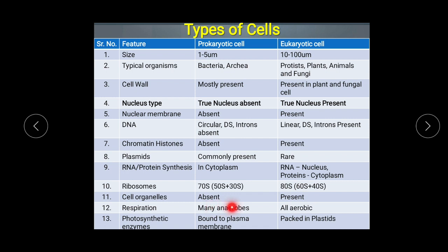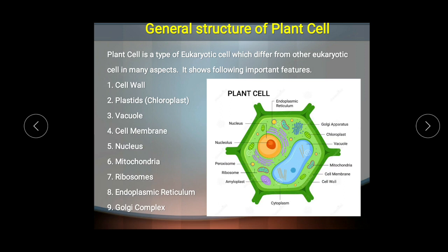Regarding respiration, many anaerobic type organisms are present in prokaryotes, while aerobic type respiration is seen in eukaryotes. Photosynthetic enzymes are bound to the plasma membrane in prokaryotic cells and are not packed in a special cell organelle, while in eukaryotes there is a special cell organelle called plastids in which the photosynthetic enzymes are packed.